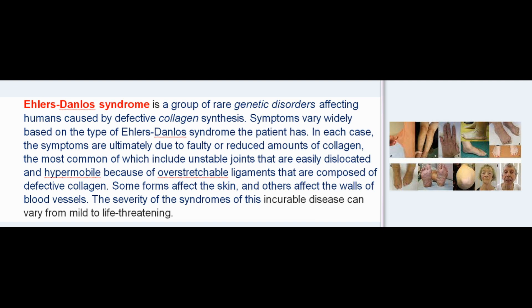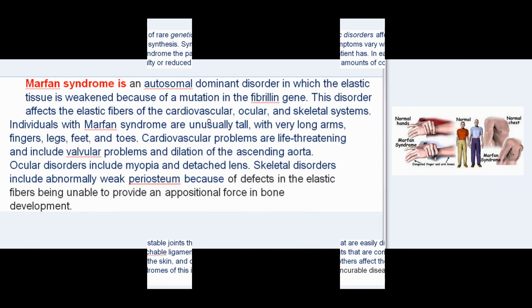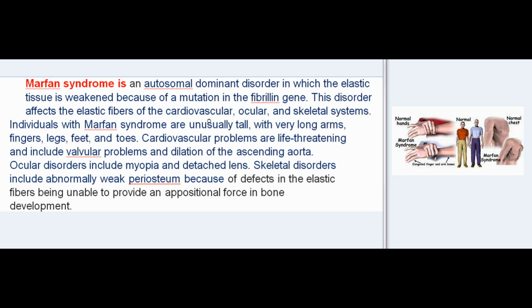Some forms of Ehlers-Danlos syndrome affect the skin and others affect the walls of blood vessels. The severity can vary from mild to life-threatening. Marfan syndrome is an autosomal dominant disorder in which the elastic tissue is weakened because of a mutation in the fibrillin gene, affecting the elastic fibers of the cardiovascular, ocular, and skeletal systems.